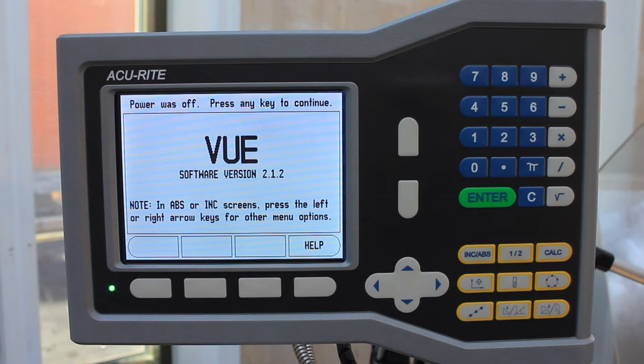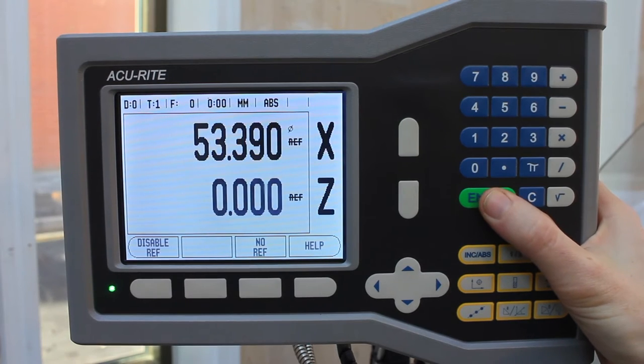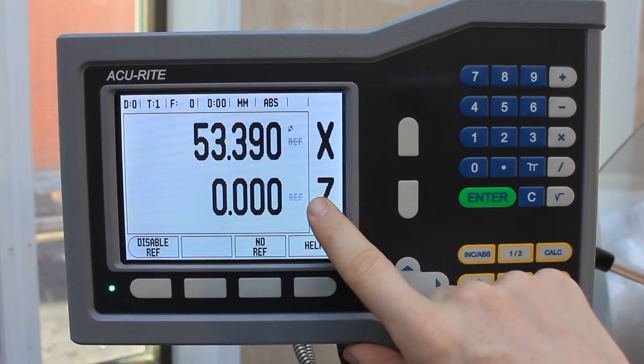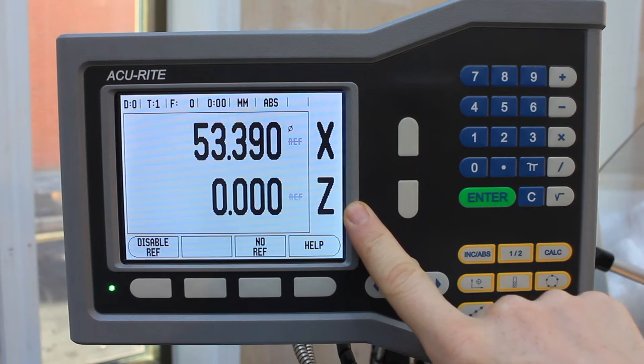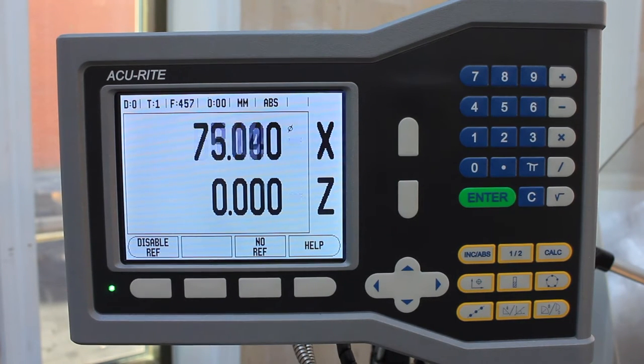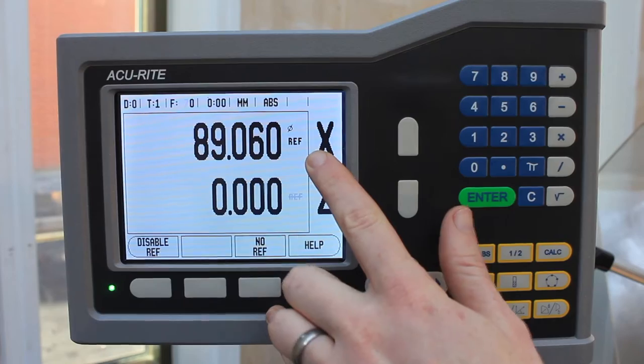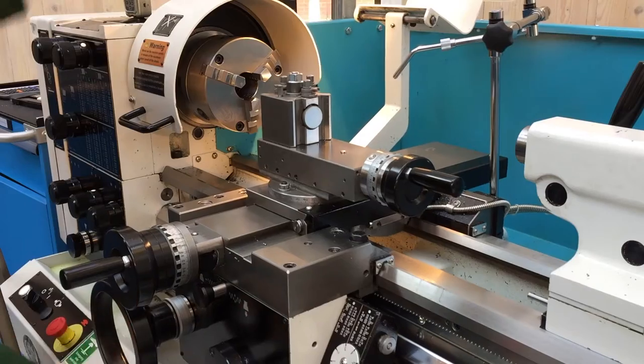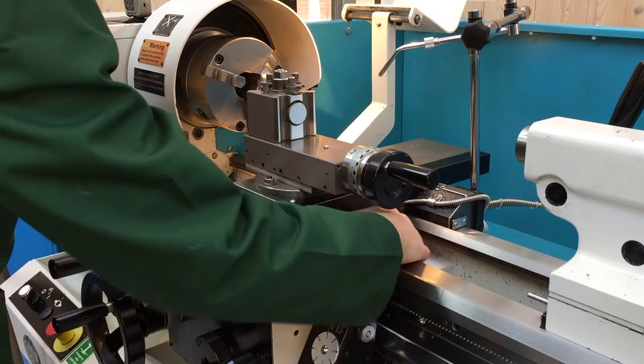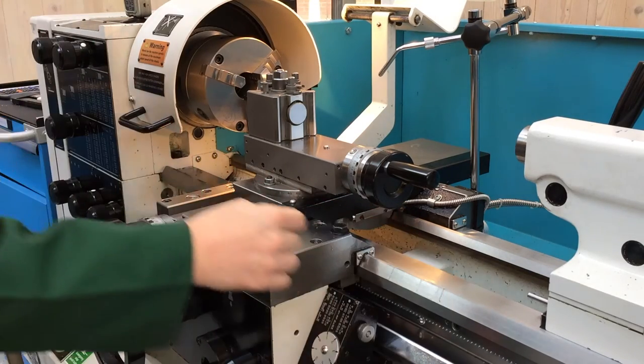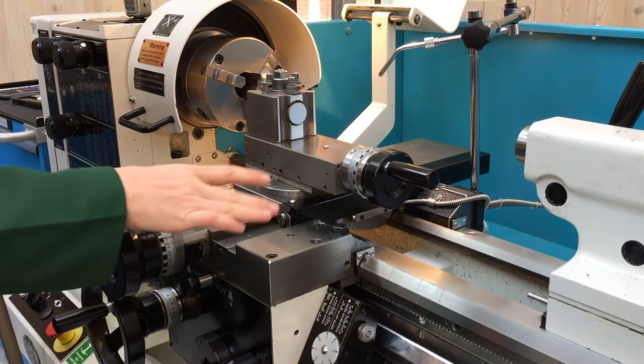The AccuRite View is a digital readout that can be used for either a mill or a lathe. In both instances, the first thing to do when you switch it on is hit the enter key and you'll need to traverse the reference point so that the machine knows where it is in both the X and Z axis. To do that we just move the axes until the reference stops flashing. What that's doing is using the little linear encoders on both axes so the machine knows where it is.